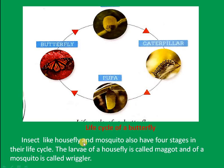Insects like housefly and mosquito also have four stages in their life cycle. The larva of a housefly is called a maggot, and the larva of a mosquito is called a wriggler.